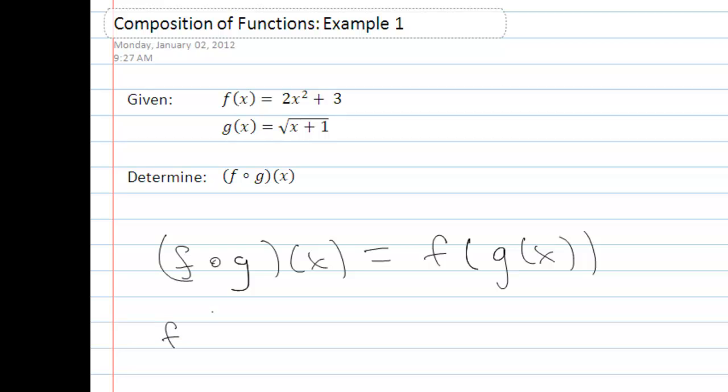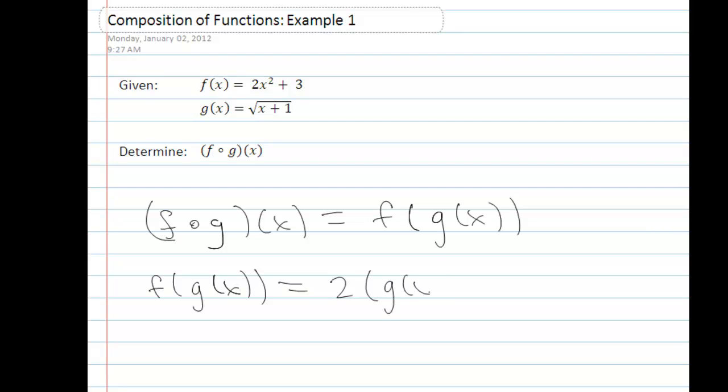So f composed g of x, or f of g of x, is equal to 2g of x squared plus 3.